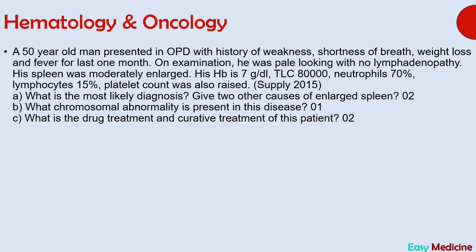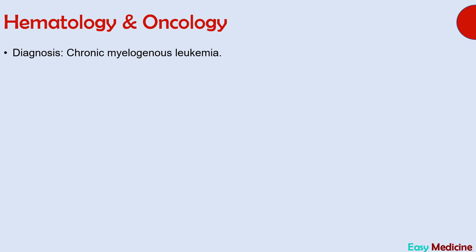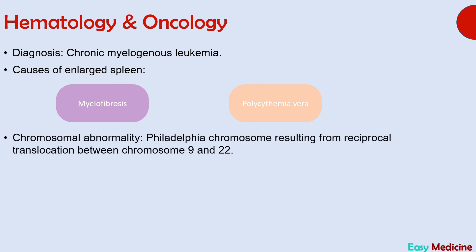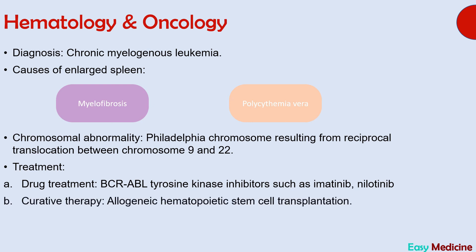The next diagnosis is chronic myelogenous leukemia. Important diagnostic points are shortness of breath, weight loss, fever, pallor with no lymphadenopathy, and laboratory findings of decreased hemoglobin and increased total leukocyte count with increased fractions of neutrophils, basophils, and eosinophils. The question asked about two causes of enlarged spleen: myelofibrosis and polycythemia vera. The chromosomal abnormality is the Philadelphia chromosome, resulting from reciprocal translocation between chromosomes 9 and 22. Drug treatment involves BCR-ABL tyrosine kinase inhibitors such as imatinib or nilotinib. Curative therapy involves allogeneic hematopoietic stem cell transplantation.